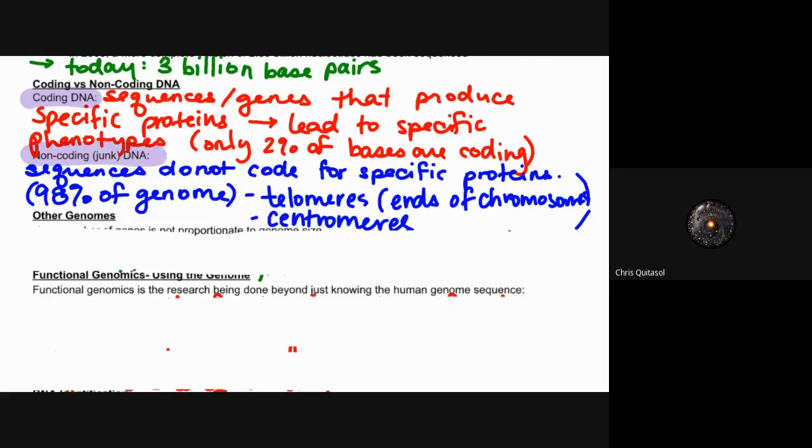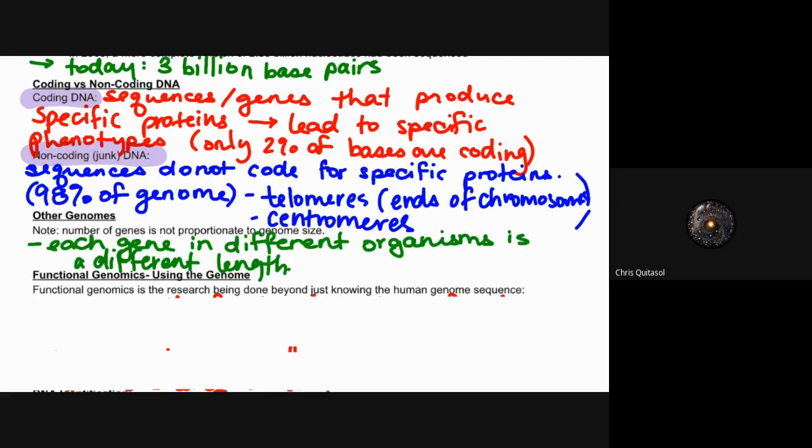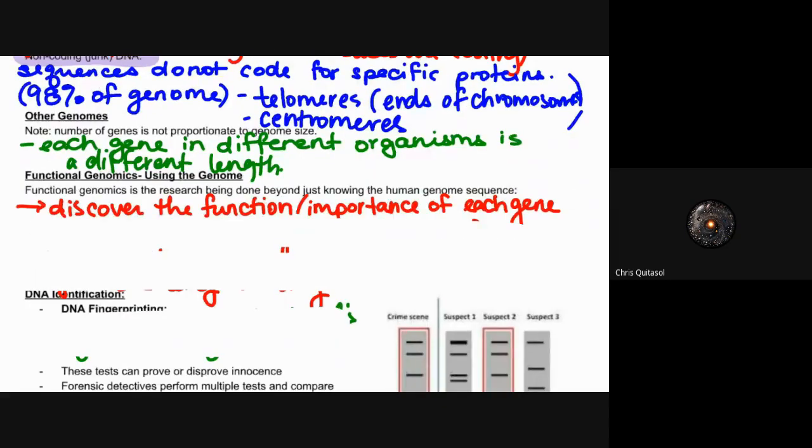That's the two main types of DNA—coding and non-coding—and that's all we really need to worry about. Some other genome information: the number of genes is not proportionate to the genome size. Each gene in different organisms is a different length and it's varied as a result of the species and those environmental factors, which we will look at more in the next unit. So functional genomics—what is the genome good for, how do we understand it as a whole, and what can we utilize it for? Functional genomics is the research being done beyond just knowing the human genome sequence. It helps discover the function and importance of each gene and allows for a way to treat genetic disorders.